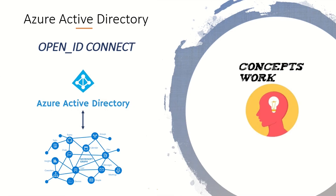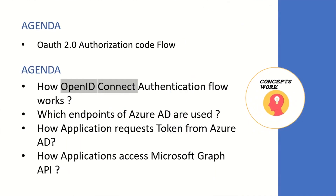Hi guys, hope you're all doing well. Welcome back to our series on Azure Active Directory. In this video we are going to talk about the OpenID Connect protocol, how the authentication flow works similar to OAuth 2.0 authorization code flow, and how an application can use this protocol to verify the identity of a user and access a protected API, which will be Microsoft Graph in our case.